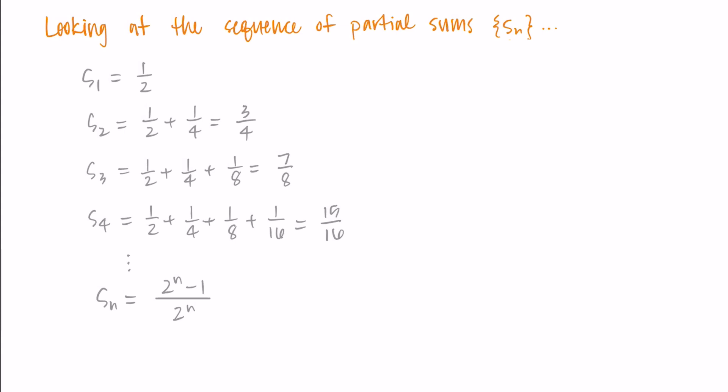Now I want to compute the limit as n approaches infinity of these partial sums, because I want to know if they eventually converge or settle to a specific value. So I'm taking the limit as n approaches infinity of (2ⁿ - 1)/2ⁿ. Now this is an indeterminate form, so I could use L'Hôpital's rule, but I'm actually just going to simplify it because I think it's a little more straightforward.